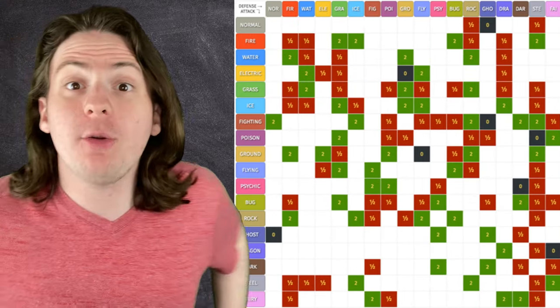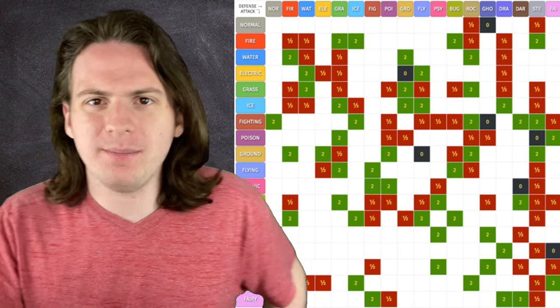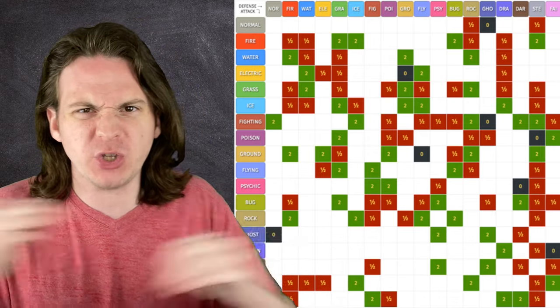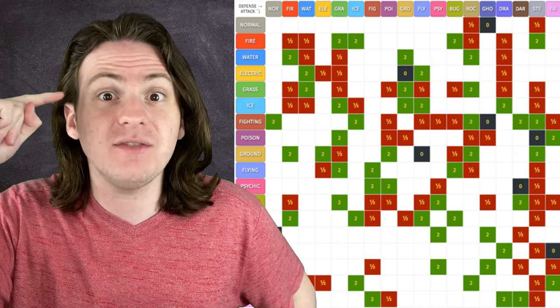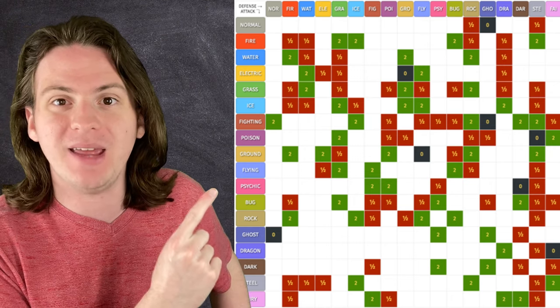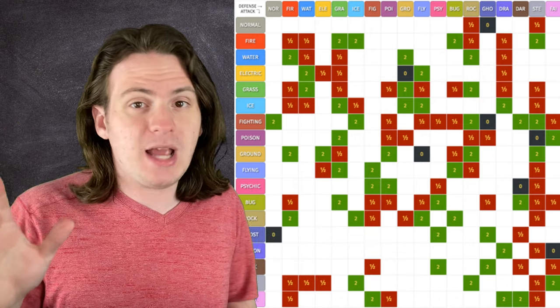This is the Pokemon type chart, the backbone to every Pokemon battle, the cheat sheet to the most complicated game of rock-paper-scissors ever invented, the thing that's burned itself into our collective subconscious. Well, green squares at least. 15 years I've been playing this game, I still can't remember all these resistances. It looks pretty complicated.